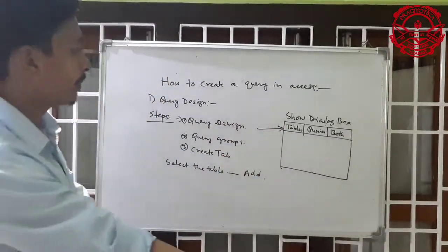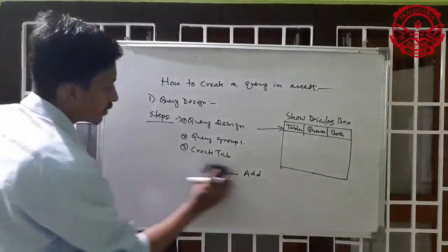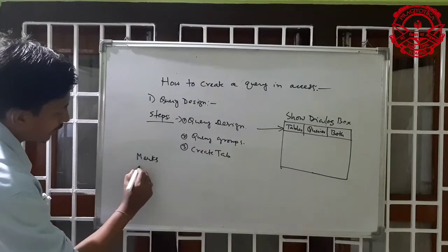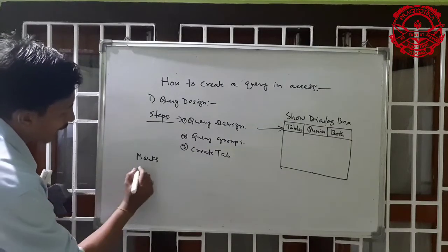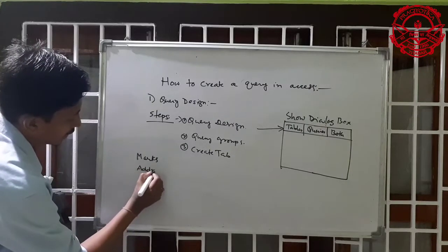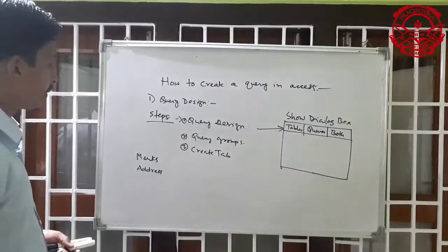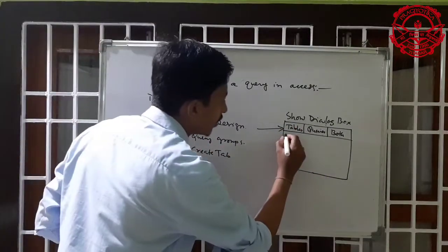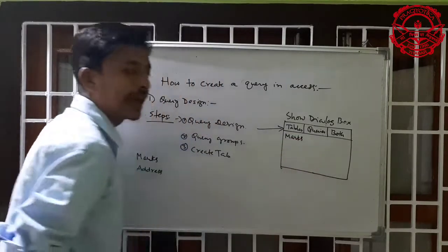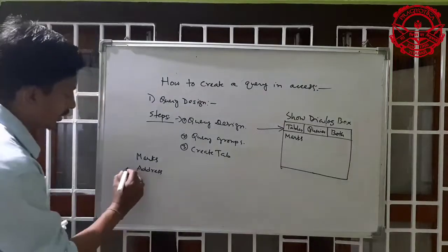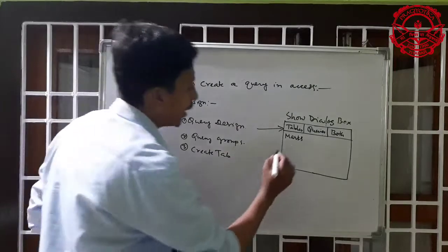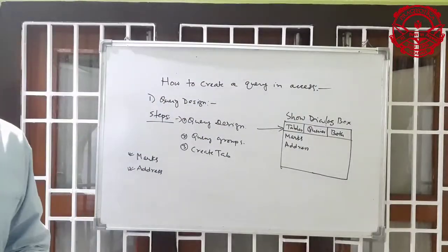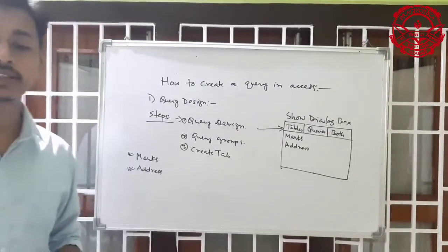For example, if you have two tables — say a marks table and an address table — when you click tables a dialog comes asking which table you want to select. First select the marks table, and after that you can select another table, the address table. You can repeat these steps to add several related tables.